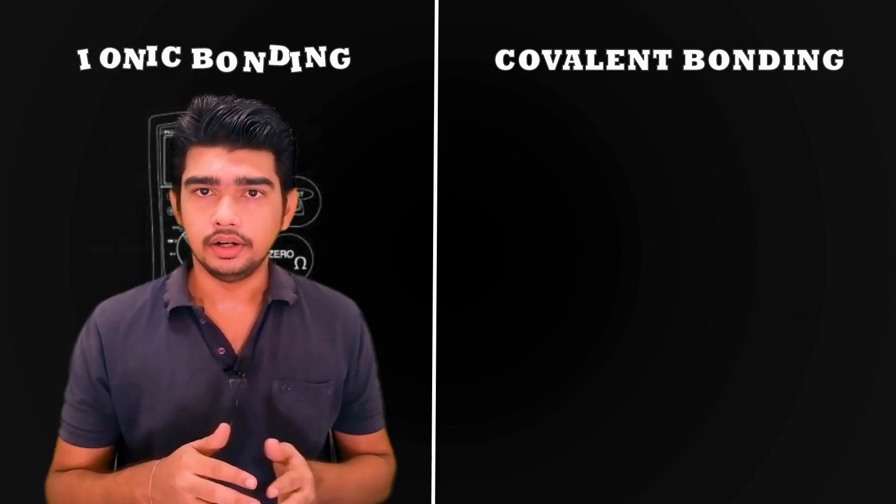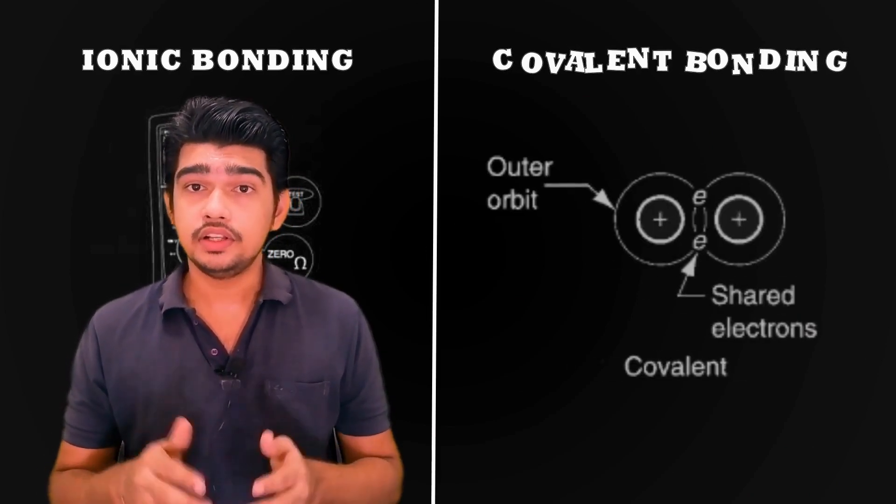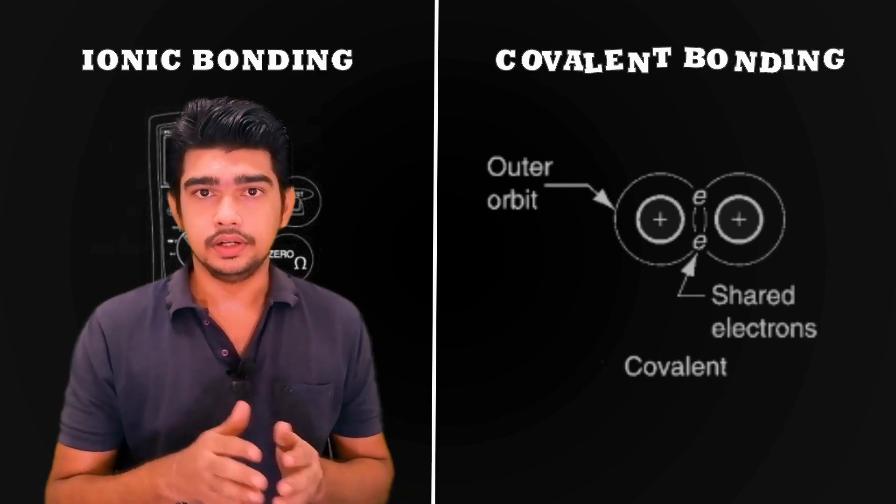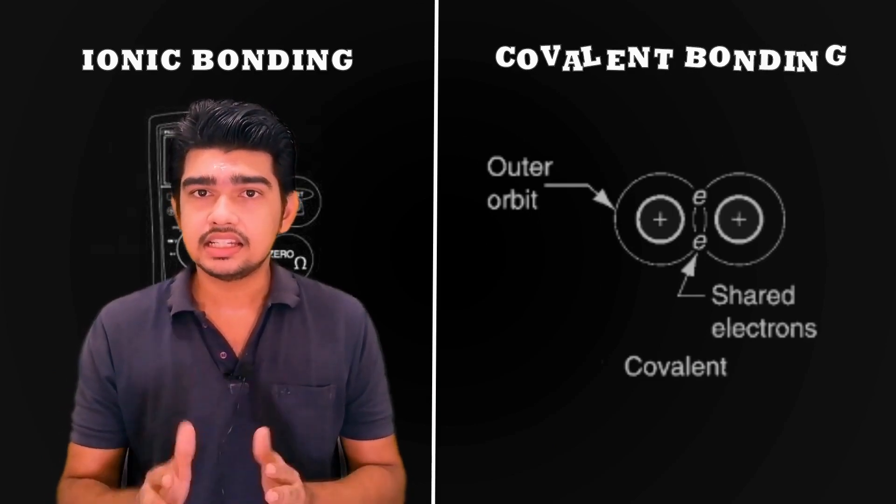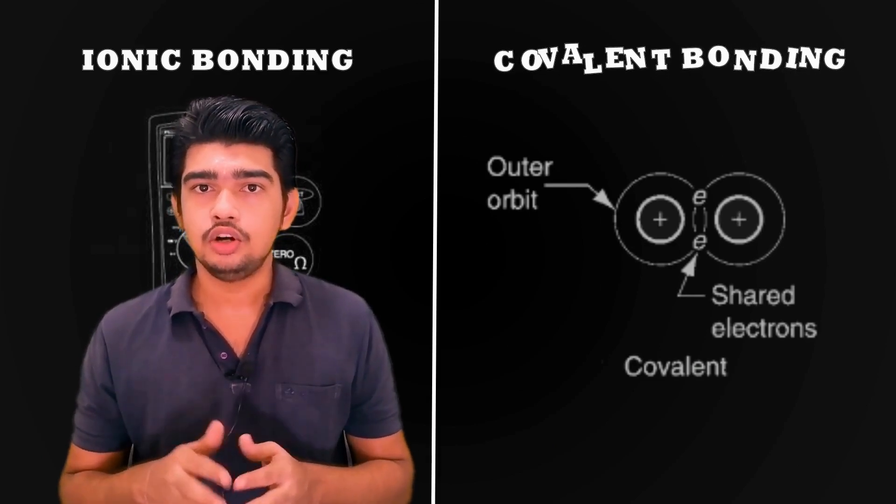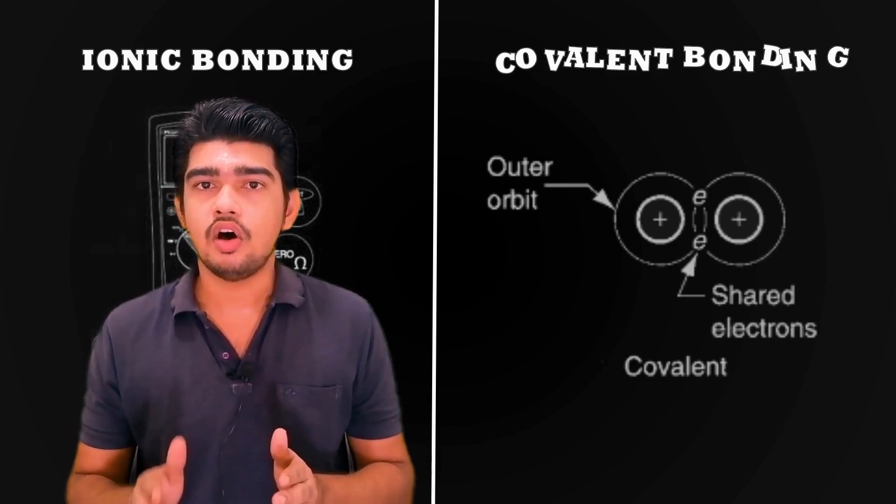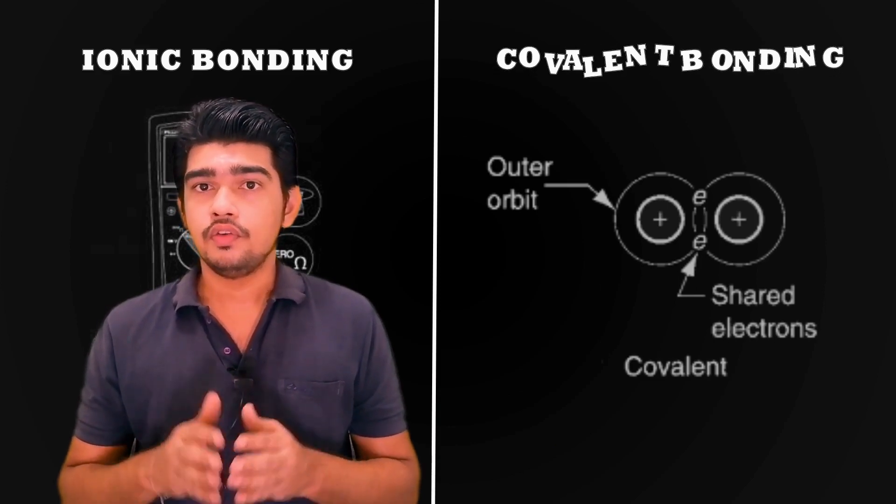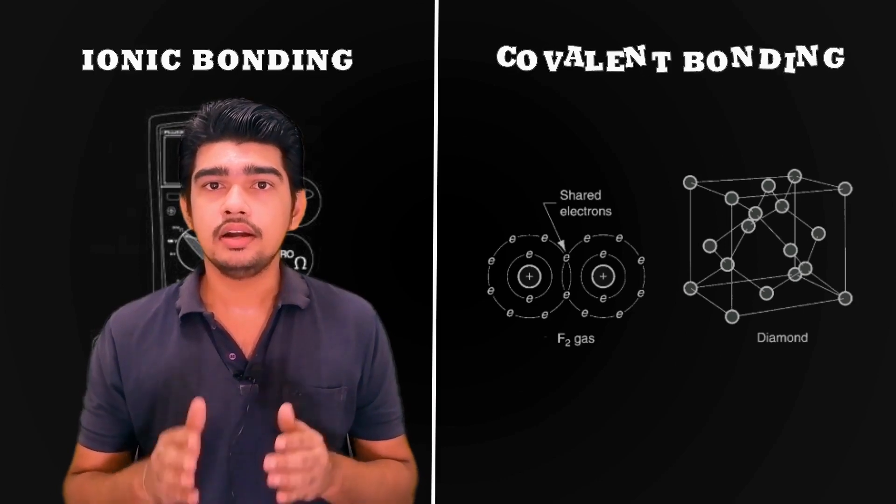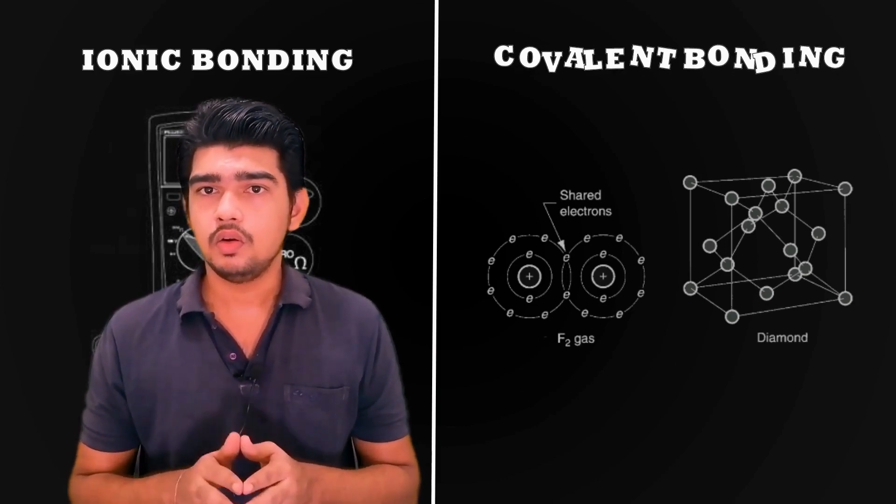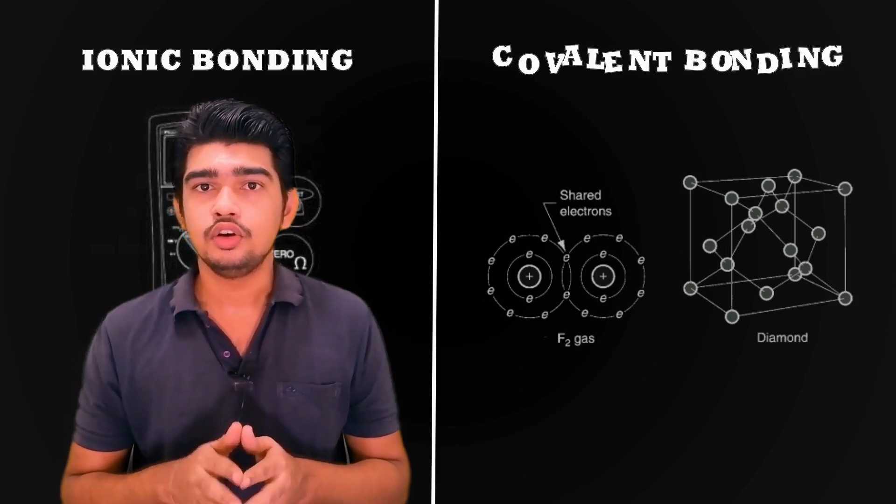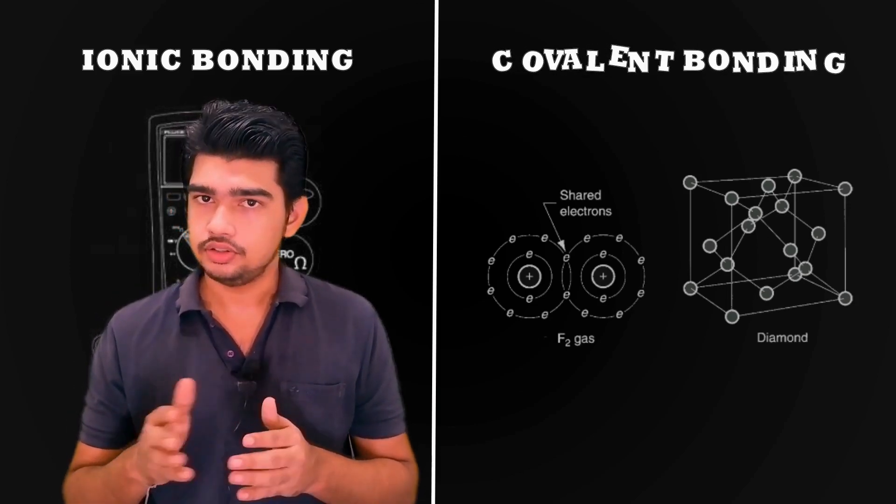Covalent bond. This is one in which electrons are shared, as opposed to transferred. It is just shared between atoms in the outermost shell to achieve a stable set of 8. Fluorine and diamond are two examples of covalent bonds. In fluorine, one electron from each of two atoms is shared to form F2 gas, as shown.